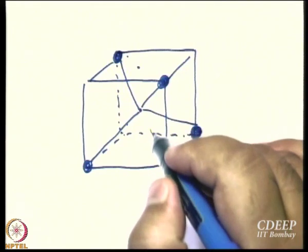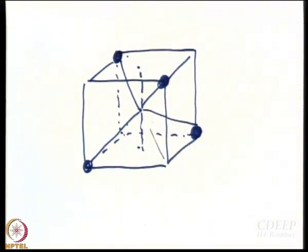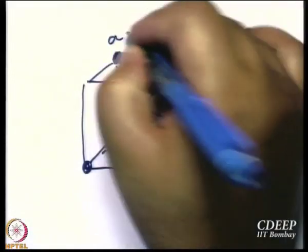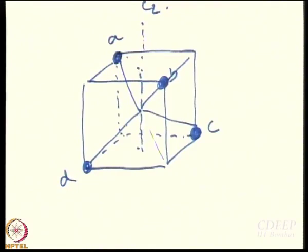Is there any other axis of symmetry? You have identified C2 already. Where is C2? Let us start with the top face — take the face center of the top face and the face center of the bottom face and join them. Let us name the vertices A, B, C, and D. If I apply a C2 rotation along this axis, A and B interchange, and C and D interchange.